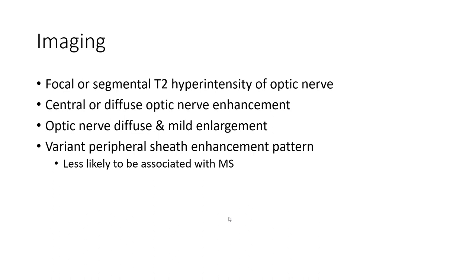On MRI, you can find focal or segmental T2 hyperintensities of the optic nerve, central or diffuse optic nerve enhancement, optic nerve diffuse and mass-like enlargement, and a variant peripheral enhancement pattern — findings that have less value when associated with multiple sclerosis.